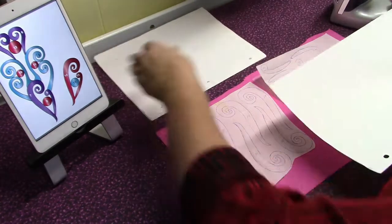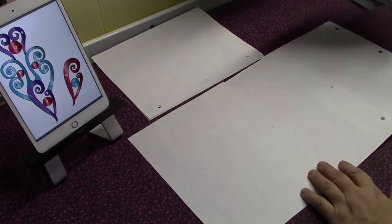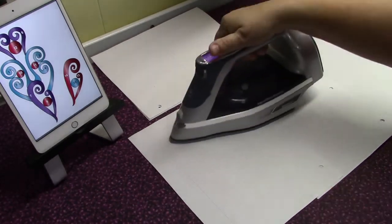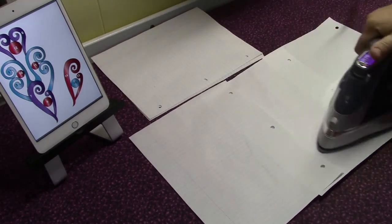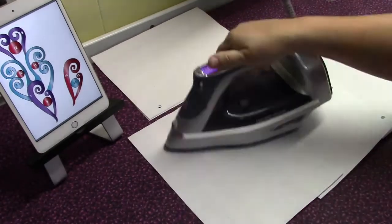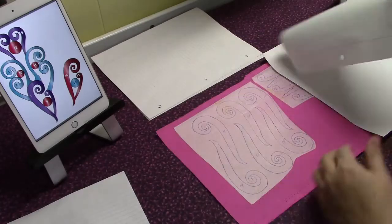To prevent the iron from getting gunk on the soleplate, I place a sheet of paper on top of the last protective sheet of steamer seam and press. To get rid of the gunk on your iron if it ever happens, Mr. Clean Eraser will do wonders to clean it up.